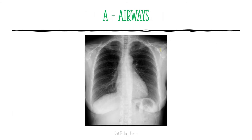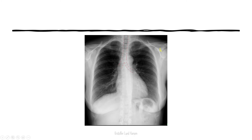Then we start with the main assessment. First, we start with A for airways. This is quite a quick step — you look at the trachea and the main bronchi and how they divide up. The trachea should be approximately in the middle of the mediastinum, though it usually goes a little bit towards the right lung.